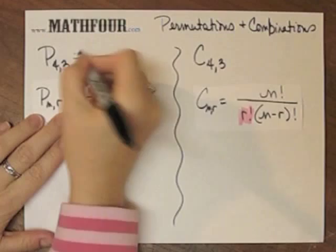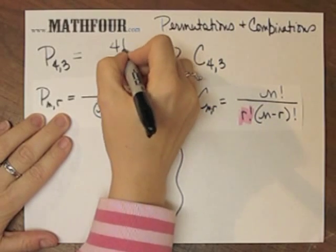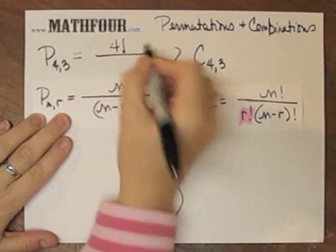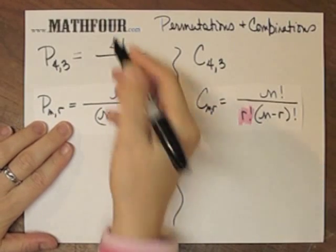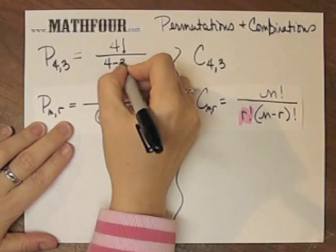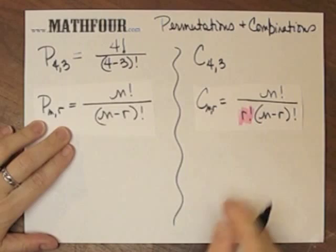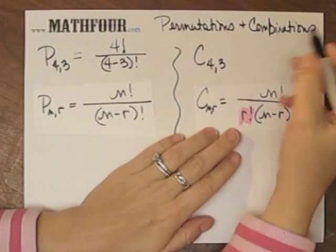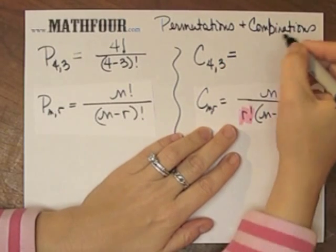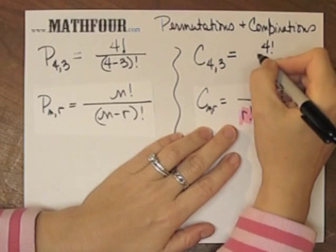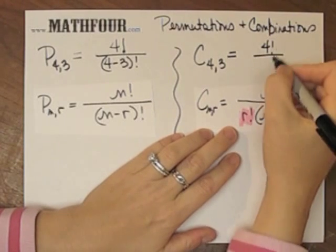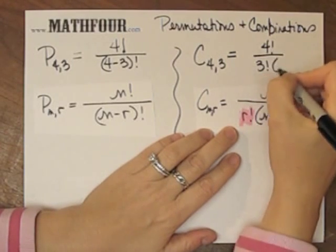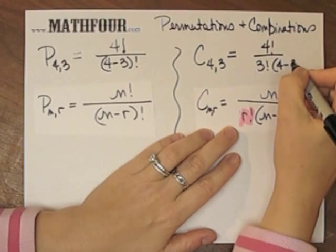So, using this formula, I'm going to do 4! over (4-3)!, and I'm going to do these simultaneously so we can see the subtle differences. This is 4! over 3! times (4-3)!.